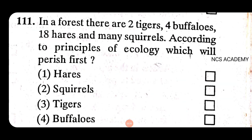In a forest there are two tigers, four buffaloes, 18 deer, and many squirrels. According to the principles of ecology, which will perish first? Buffaloes — that is the right answer.